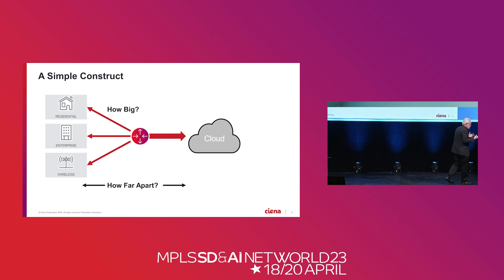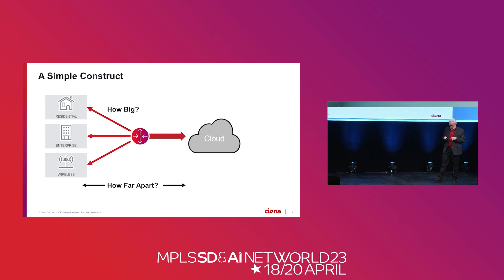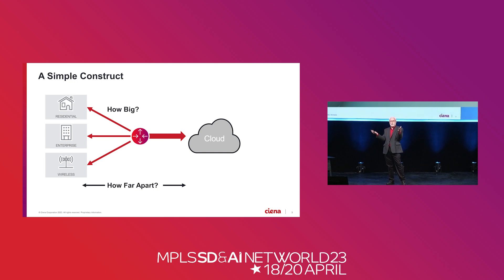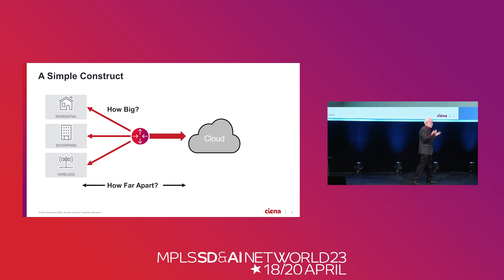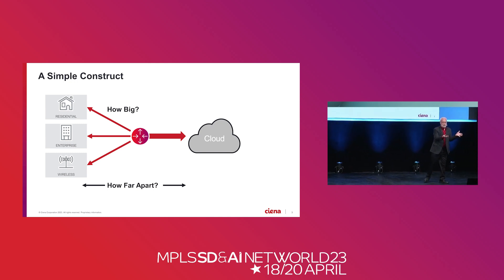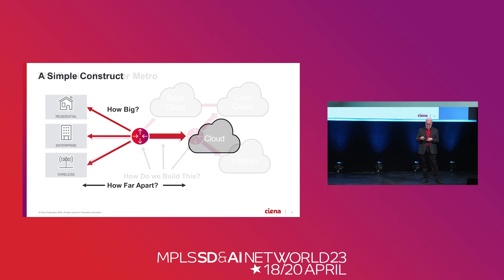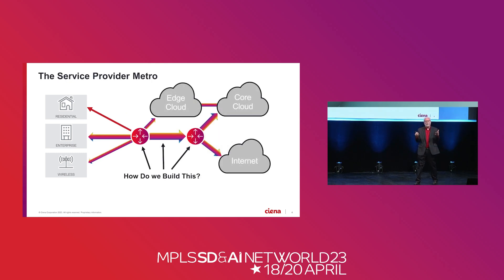What's driving all the development in PON — XGS-PON, NG-PON2, 25 gig PON, 50 gig PON, 100 gig PON — is the question of how big those connections are. Once fiber is out at the edge of the network, there really is no limit to what you can do in terms of connectivity. If you want a terabit to the edge of the network, we can do that. We can now put 400 gig in the palm of your hand, 800 gig in the next iteration, and a terabit — 1.6 terabits — comes after that.